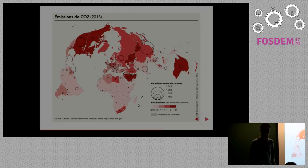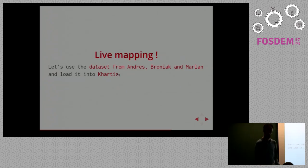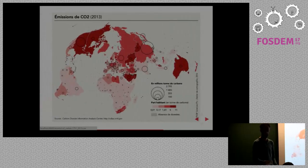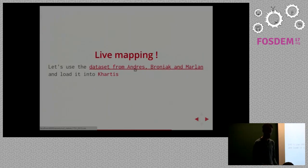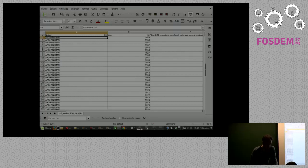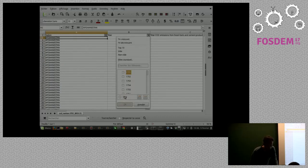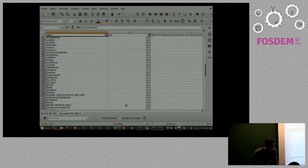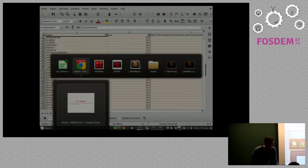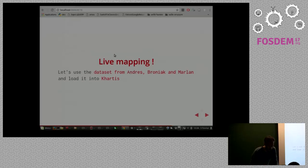Remember that map? It's the one they produced — I picked it as an example. What we're going to do now is a live mapping exercise. I found the dataset they used to make it — this map was originally done in Illustrator, I think. Now we're going to do it with Cartis using the same data. This is the dataset: total CO2 emissions across many years. I'll use LibreOffice to filter out just the year we want to map, copy that, and go to Cartis.